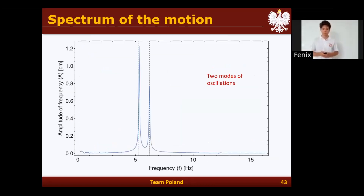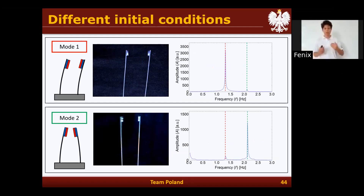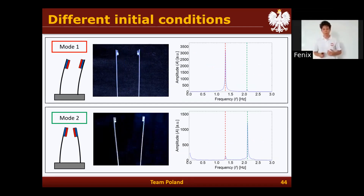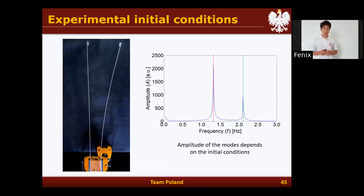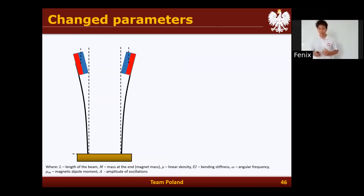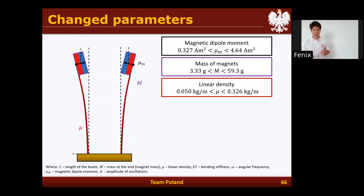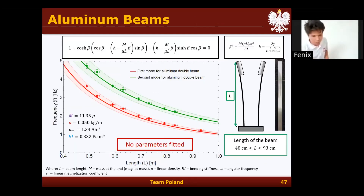Now let's move back to the frequencies. We can measure these frequencies using Fourier transforms, but we can also start from different initial conditions. We can see that for both the first and second modes, totally different modes are induced, but the frequencies are the same. The only thing initial conditions change is the distribution of amplitudes across different modes. In our experiments for frequency, we change the following parameters: the magnetic dipole moment, the mass of the magnet, the linear density of the beam, the material type, and the amplitude of oscillations.